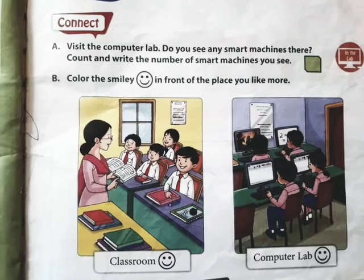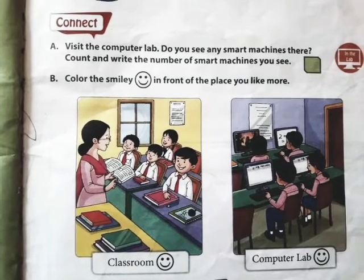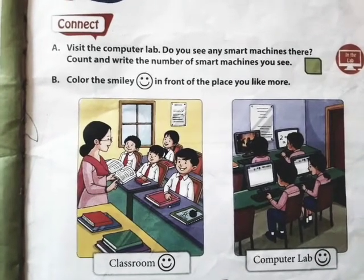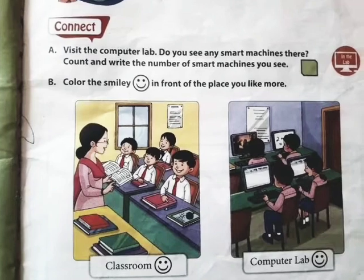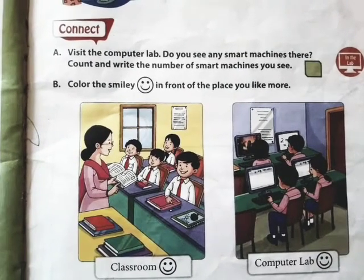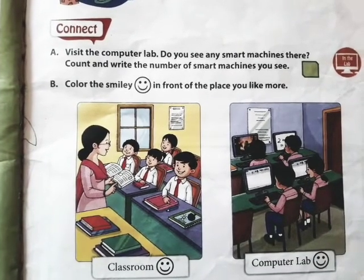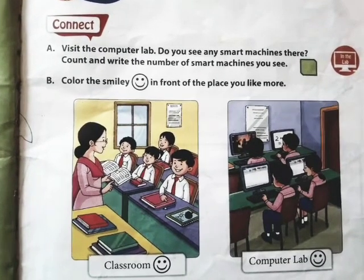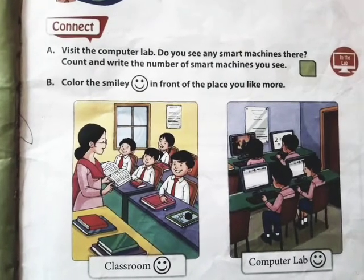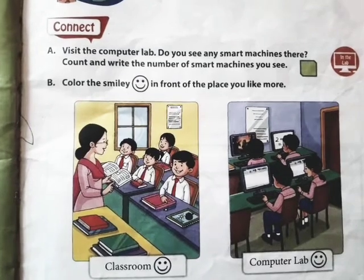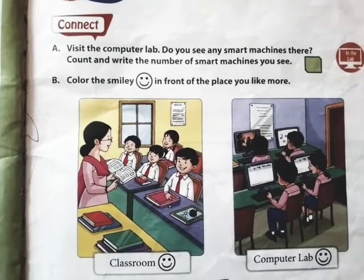Count and write the number of smart machines that you see. Dear students, right now we don't have any access to the computer lab or school. I will tell you the number of computers in our lab — we have 10 computers. So you can write the answer to question A: Do you see smart machines there? Yes. Count and write the number of smart machines you see — you can write 10.